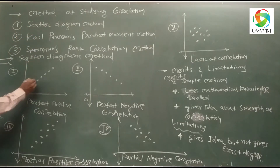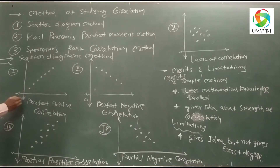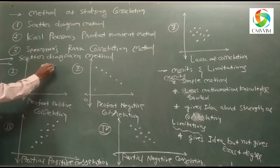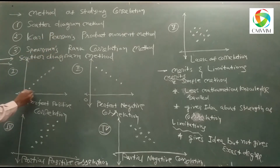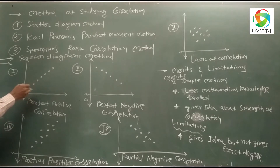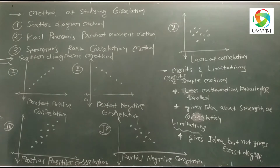First, we can obtain a figure where all points are in one straight line and go from left to right in increasing order. This is called Perfect Positive Correlation between two variables — all points in one straight line going left to right. The figure obtained is called Perfect Positive Correlation.